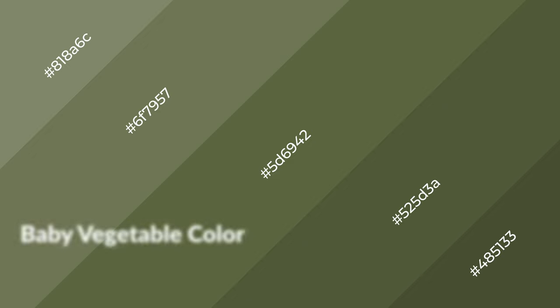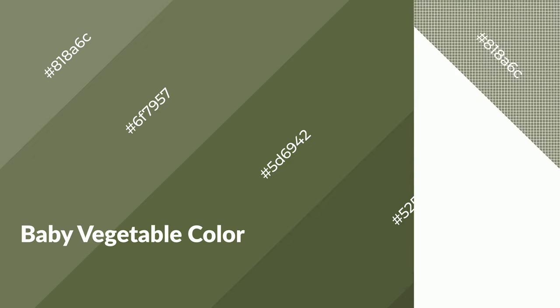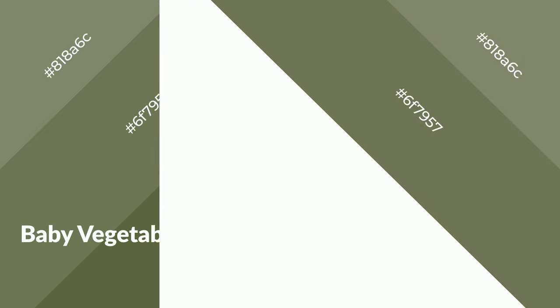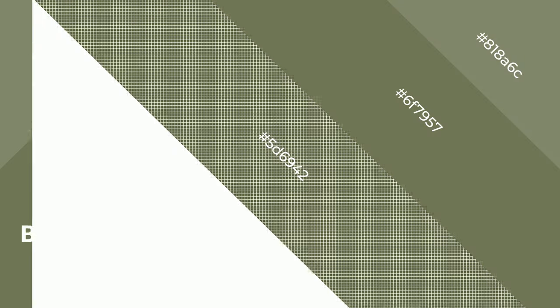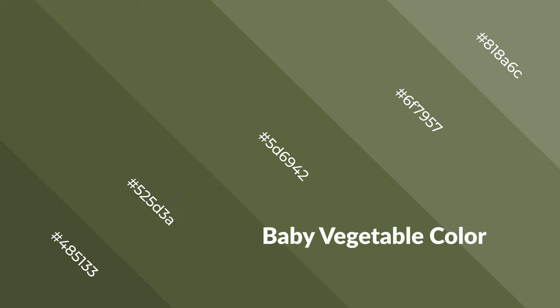Baby vegetable is a warm color and it emits cozier and active emotions. Warm colors are symbols of warmth, fire, heat, and sunshine. It also evokes joy, passion, love, and even anger. You can see them used in restaurants and gyms.